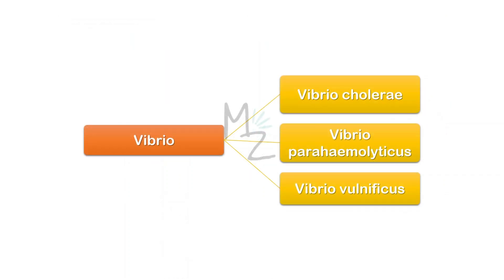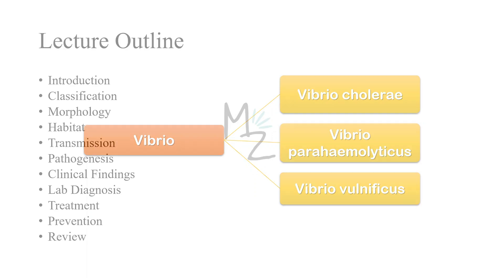Vibrio are further subdivided into Vibrio cholerae — we are done with that — Vibrio parahemolyticus — we are done with that too — and Vibrio vulnificus, that's the topic of today's video. The lecture outline: we are done with the introduction and classification. Now we'll be looking at morphology, habitat and transmission, pathogenesis and clinical findings, lab diagnosis, treatment and prevention, and at the end, as usual, we'll review the lecture.